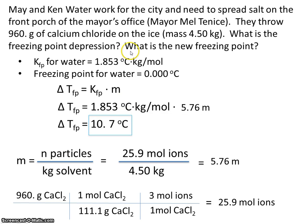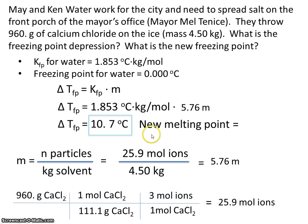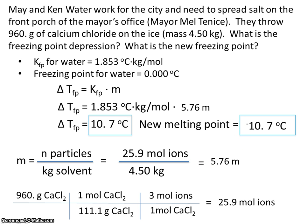So for the next question — what is the new freezing point? The initial freezing point of water was 0 degrees Celsius. If the freezing point goes down by 10.7, then the new freezing point, or melting point, is minus 10.7 degrees Celsius.